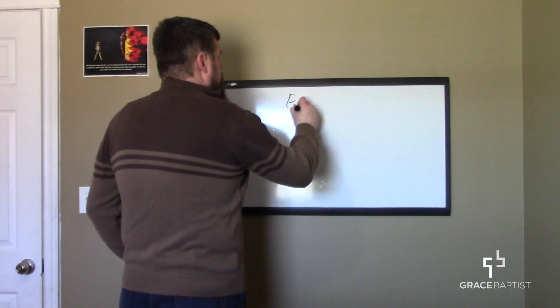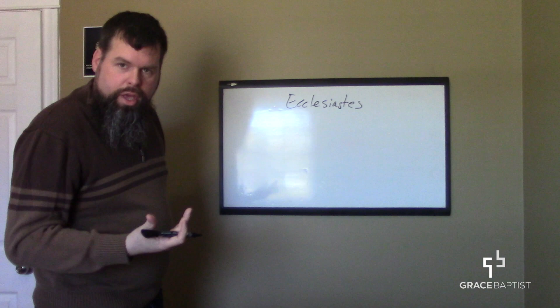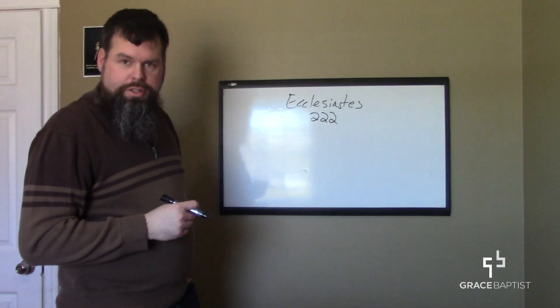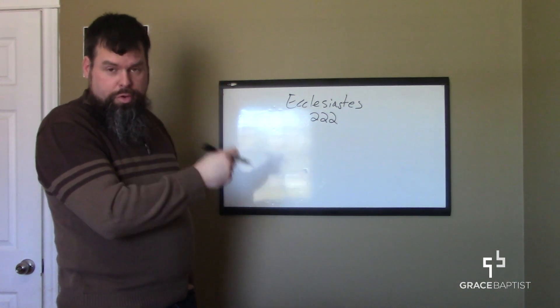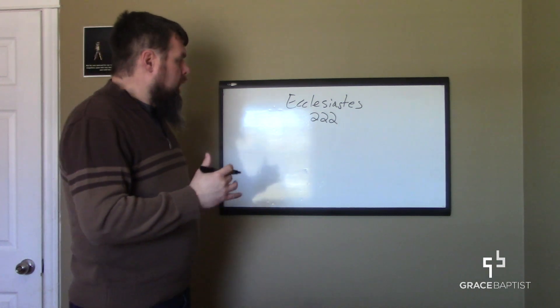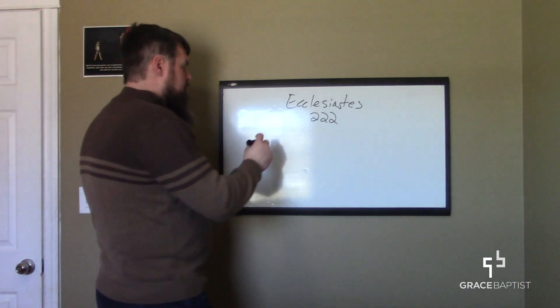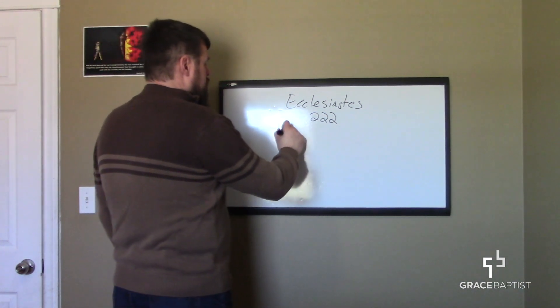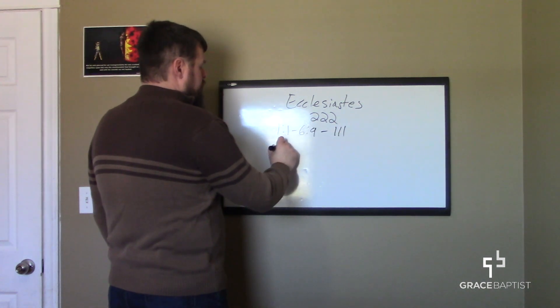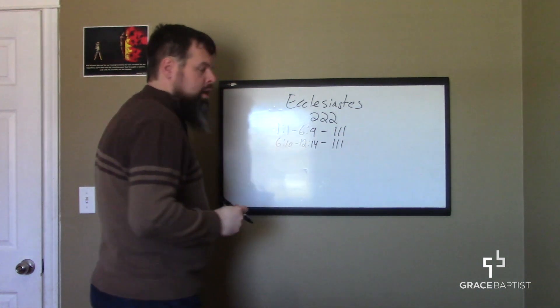So in the book of Ecclesiastes, what this author was pointing out was that there are 222 verses in Ecclesiastes. So from chapter 1:1 to 12:14, there's 222 verses. That divides neatly into two sections of 111 verses, and the book actually divides that way. From 1:1 to 6:9, there's 111 verses, and then from 6:10 to 12:14, there's 111 verses.